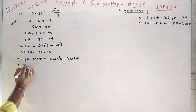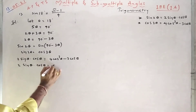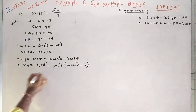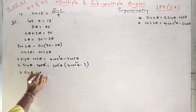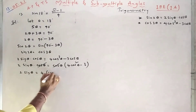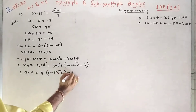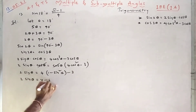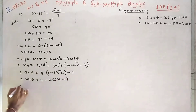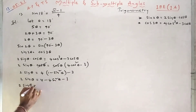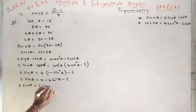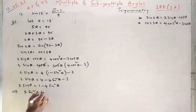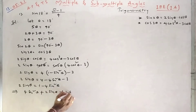Now I will take cos theta common. Cos theta cancels from both sides, giving 2 sin theta equal to 4 cos² theta minus 3. We can write cos² theta as 1 minus sin² theta, so 2 sin theta equals 4(1 minus sin² theta) minus 3, which gives 4 sin² theta plus 2 sin theta minus 1 equal to 0.